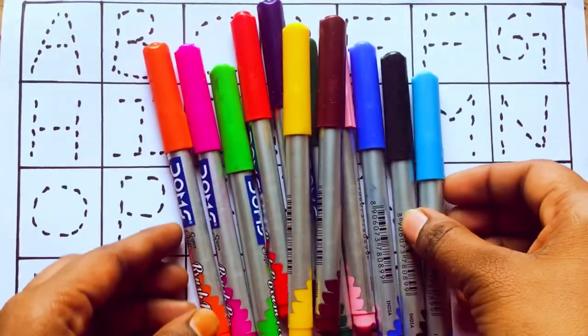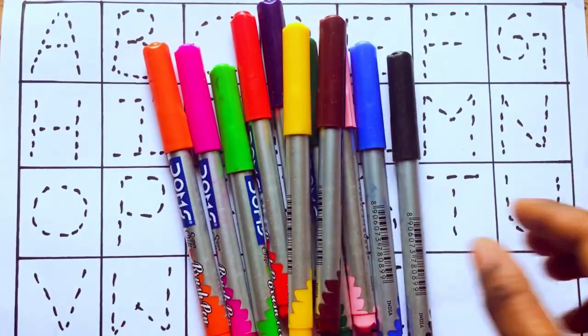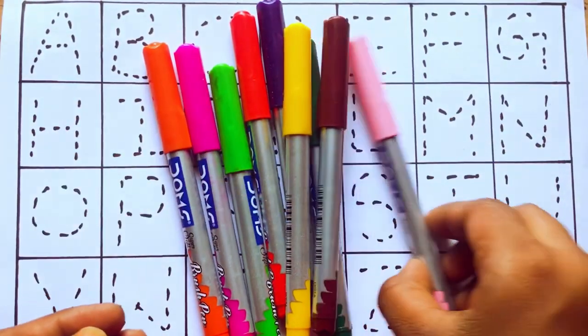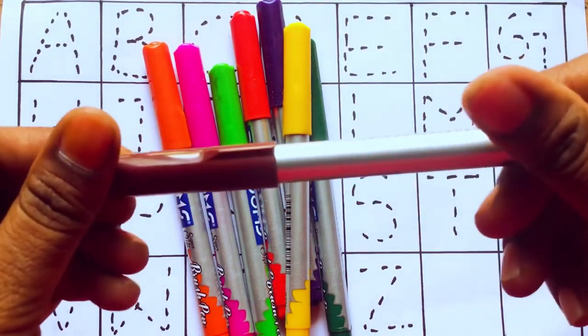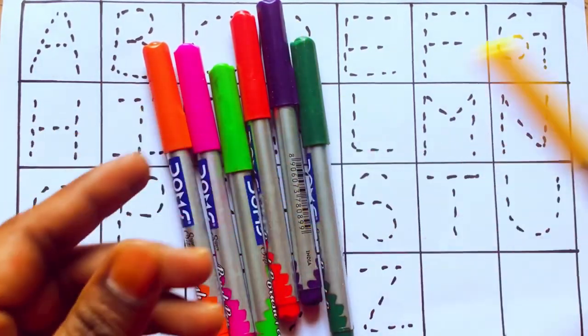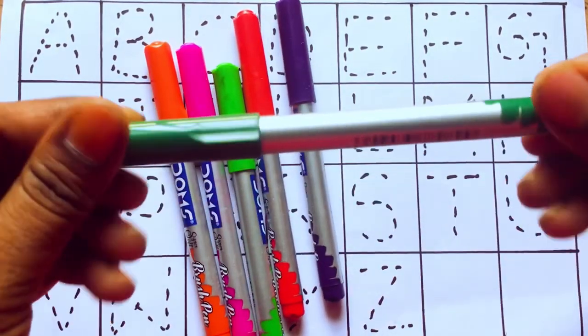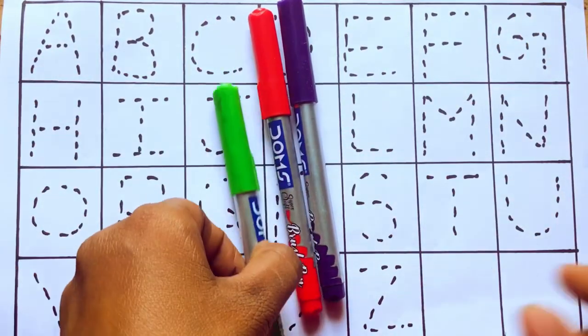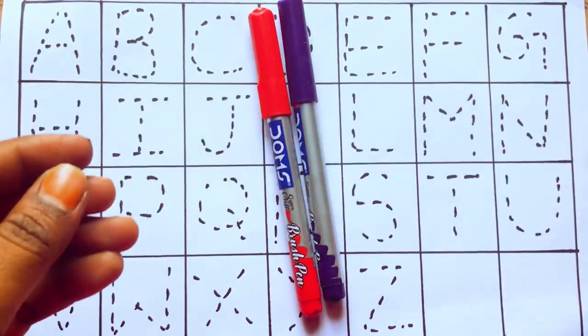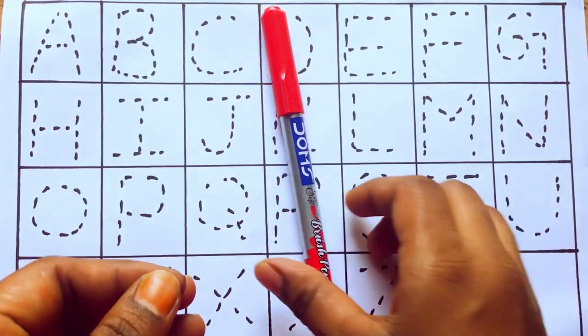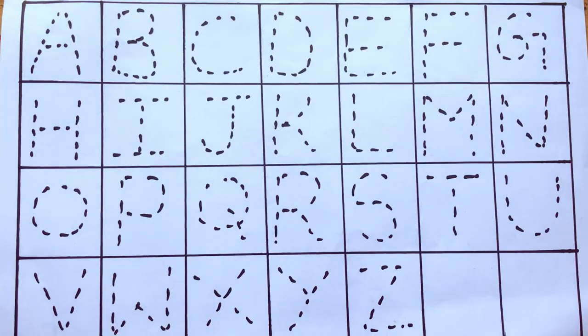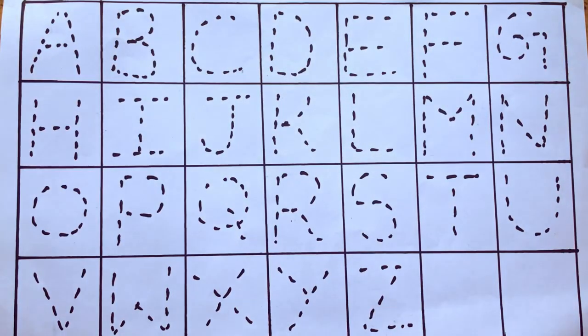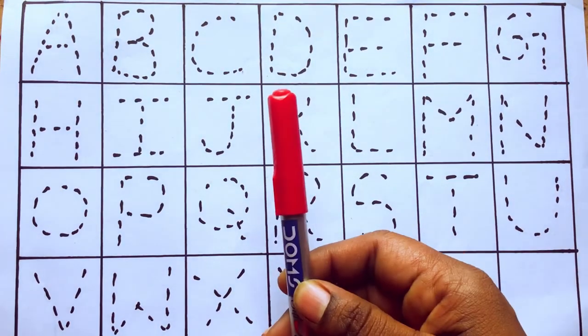Hello kids, let's see some colors: sky blue, black, blue, light pink, brown, yellow, green, orange, pink, green, violet, and red. Okay, let's draw alphabets. Orange color.